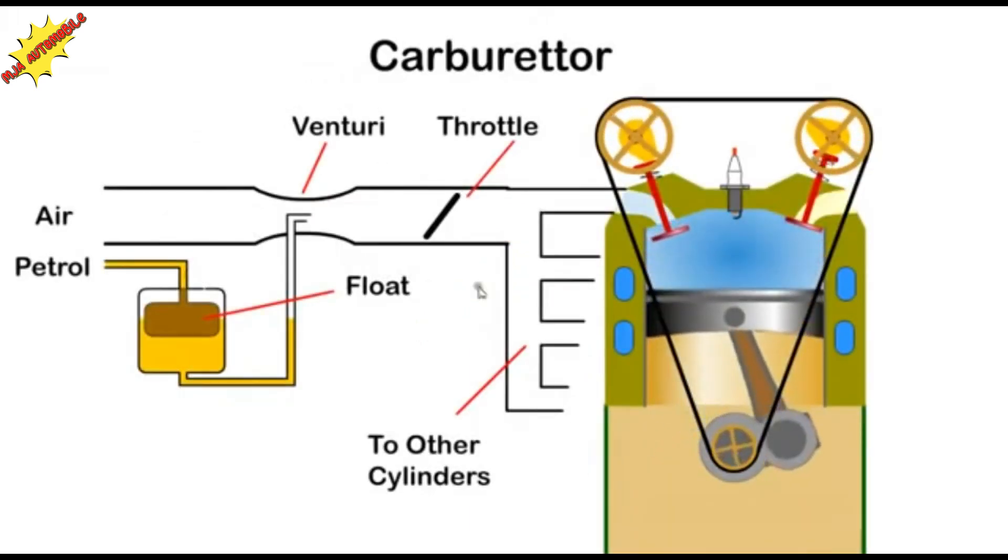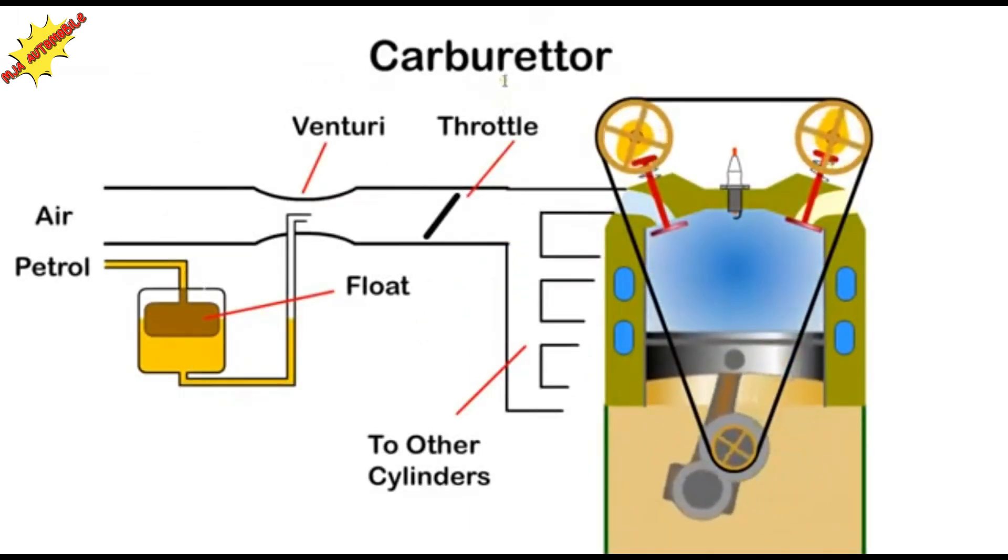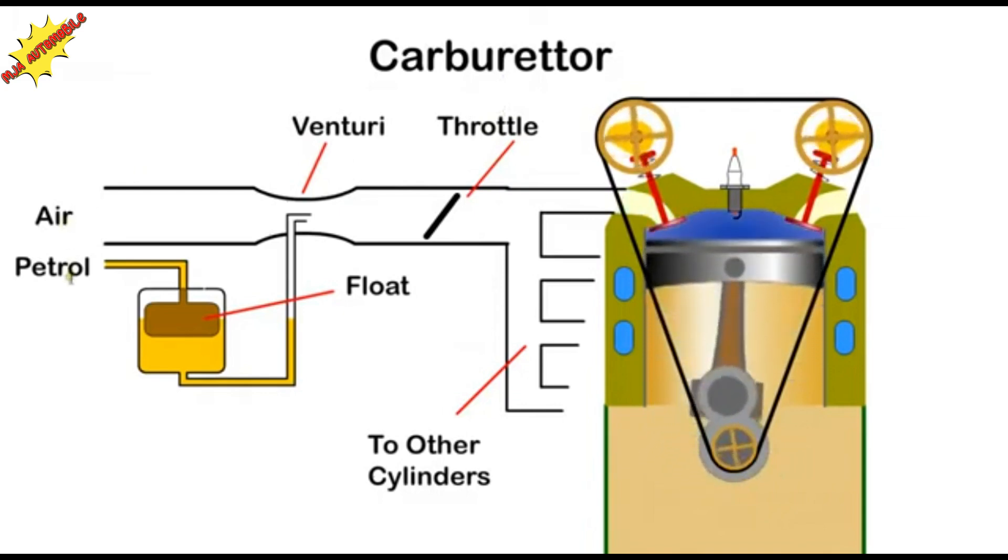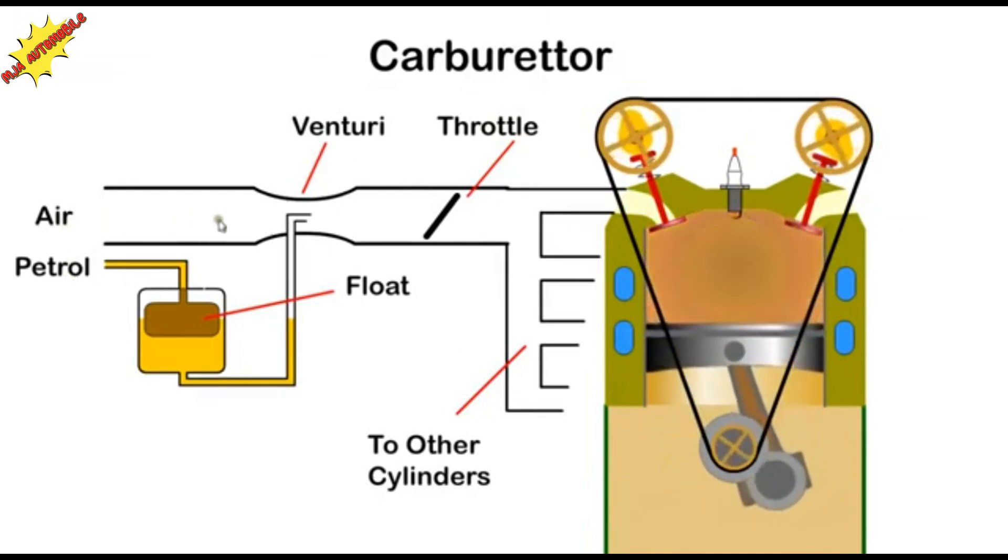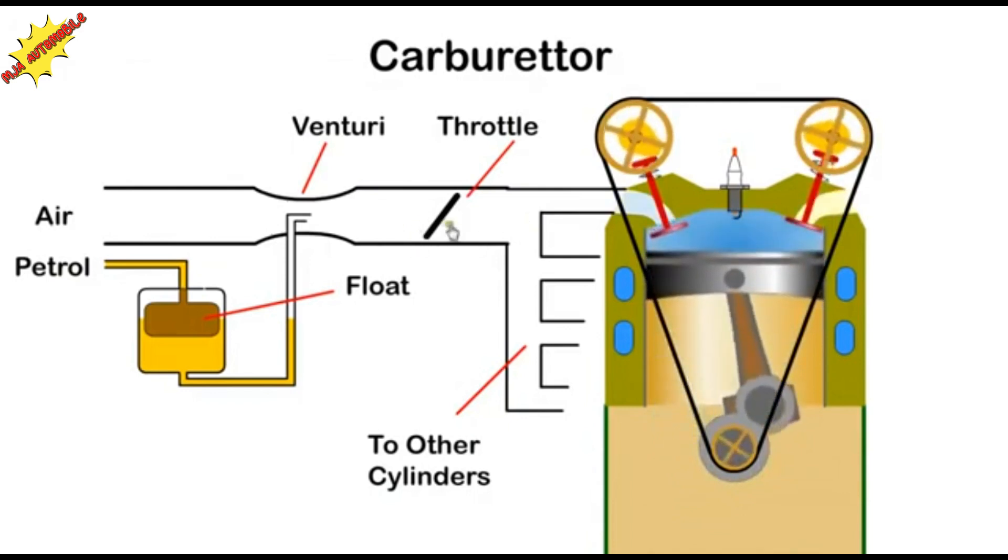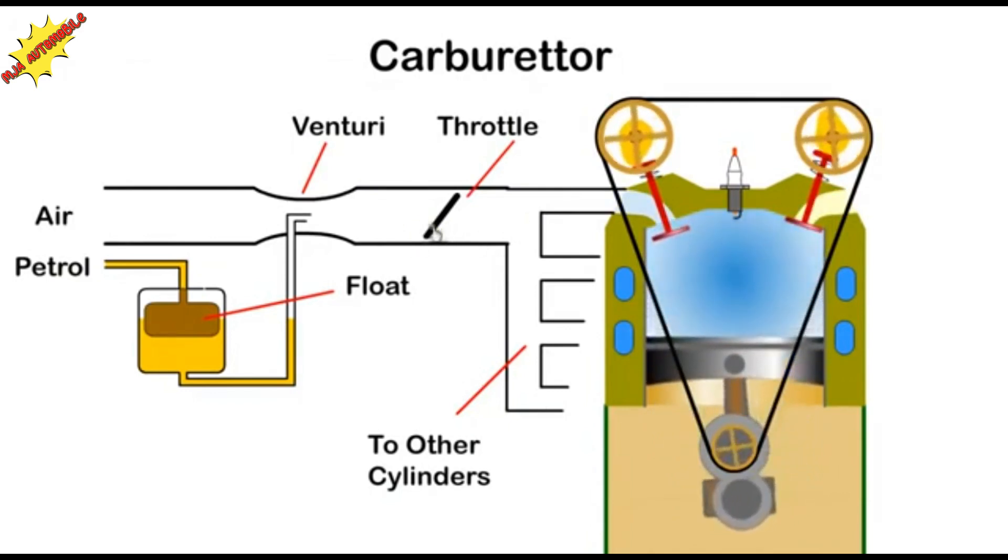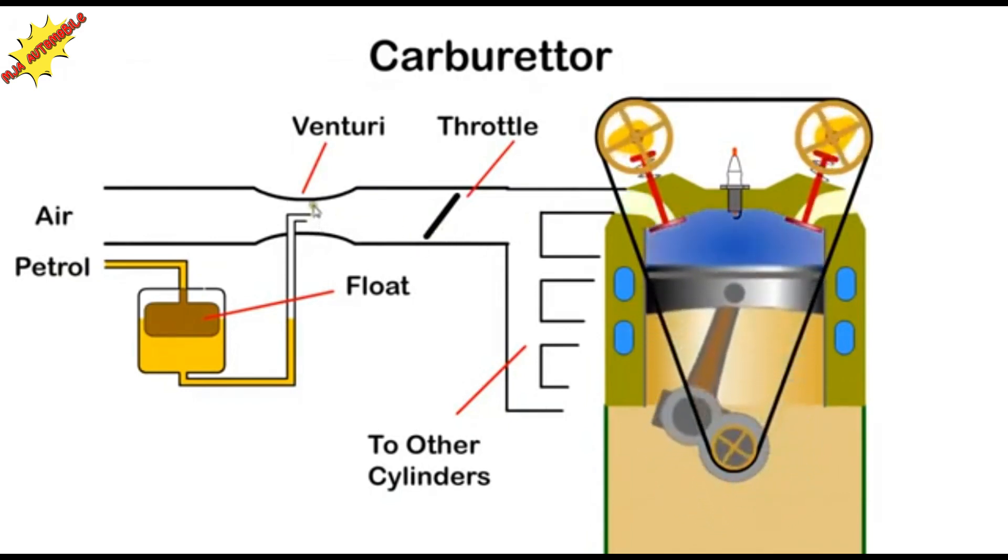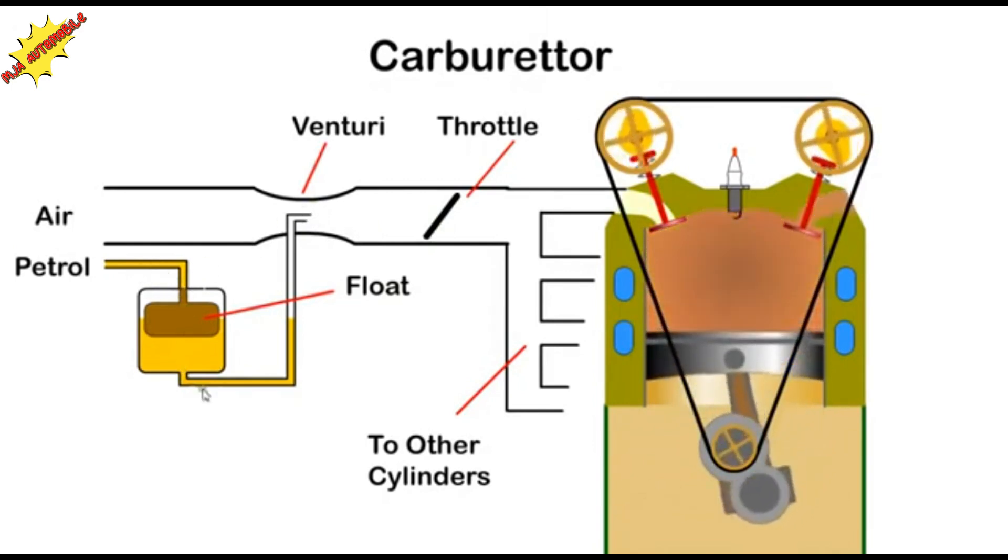Early engines use the carburetor to mix petrol and air together. Air is drawn into the engine by the pistons on the intake stroke, and the flow is controlled by the throttle. The narrow passage creates a venturi effect and draws fuel into the air stream.